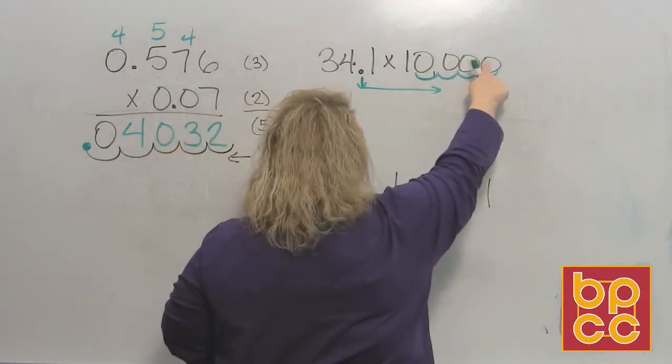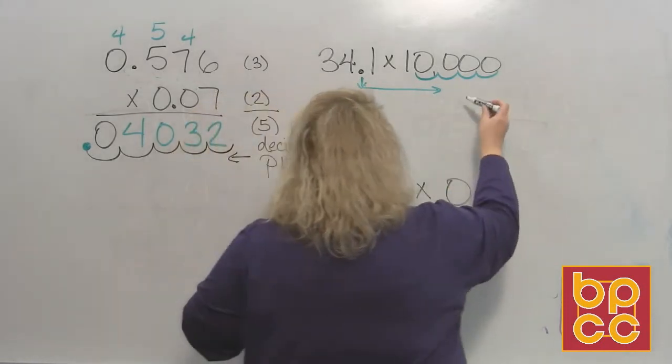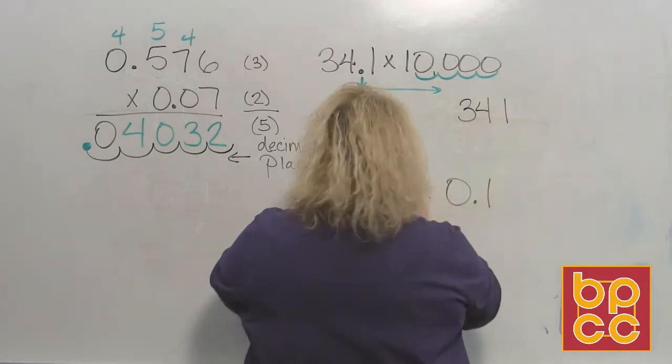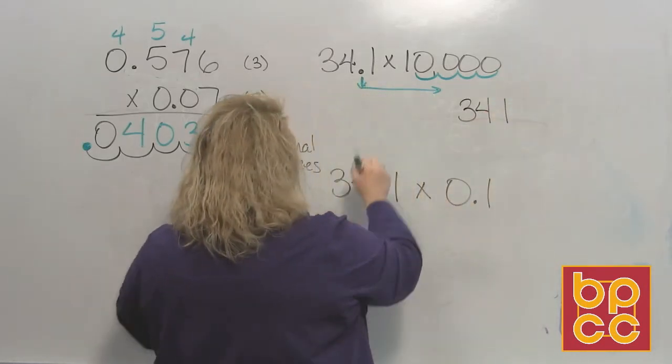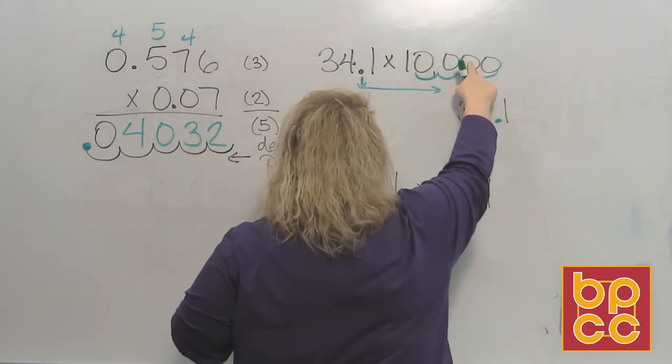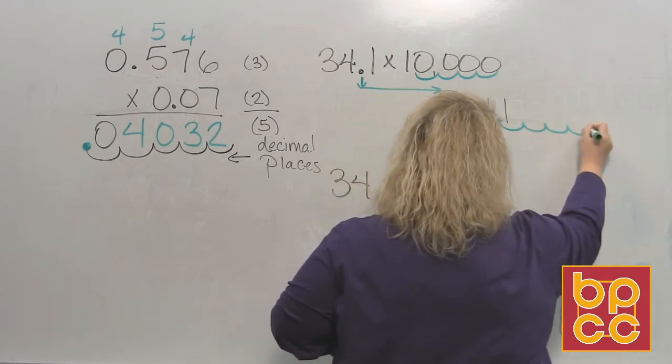1, 2, 3, 4. However many zeros I have in that number. So I have 34 and then put the 1 in there. And I'm going to move my decimal from that dot 1, 2, 3, 4 places to the right.